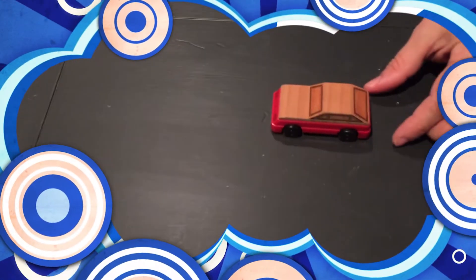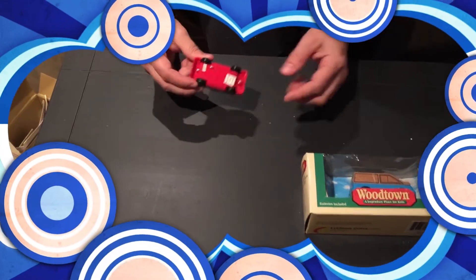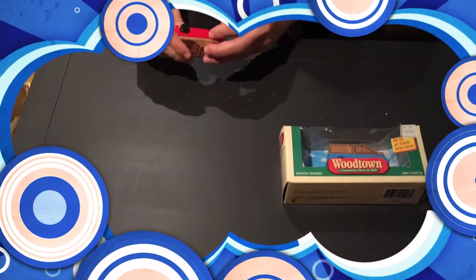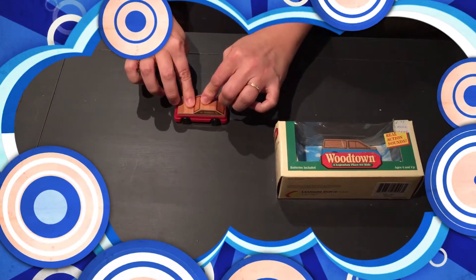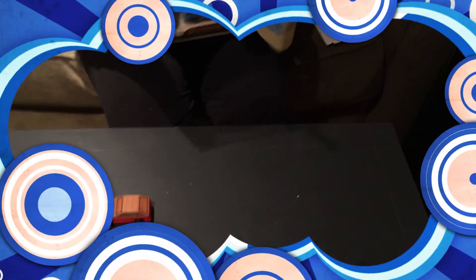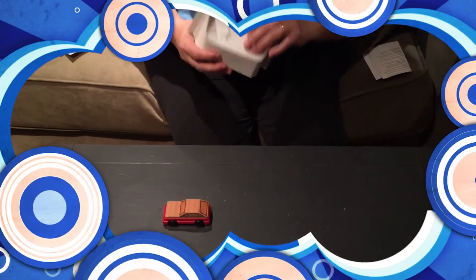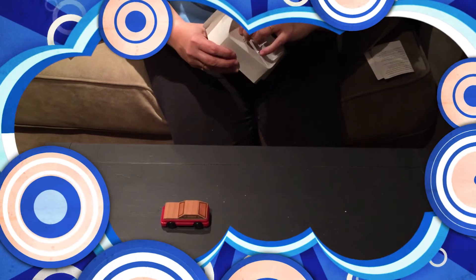So that is the passenger car and that's where the battery goes and you push down on top for the sound. All right, so this is the minivan. This is the minivan, also has twist ties.